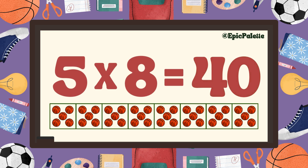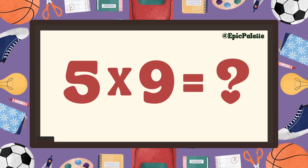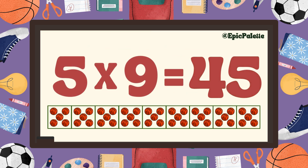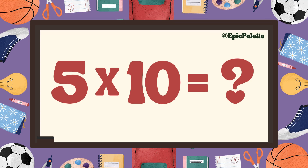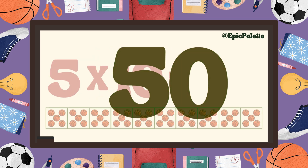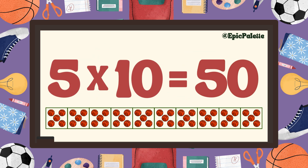Five times nine equals... Forty-five. That's right. Five times nine equals forty-five. Perfect. Five times ten equals... Fifty. That's right. Five times ten equals fifty.